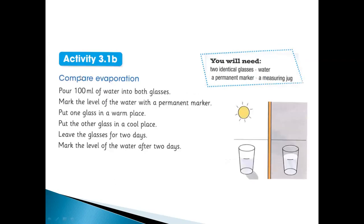Activity 3.1b: Comparing Evaporation. You need two identical glasses of water, a permanent marker to mark the water level, and a measuring jug. It is written how many milliliters — you can use a ruler. Pour 100 ml of water into both glasses.